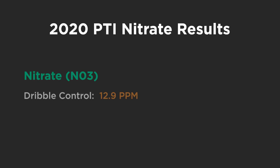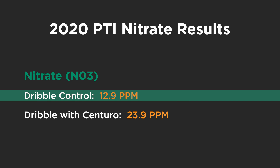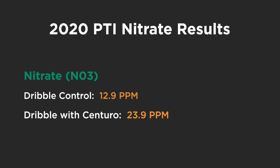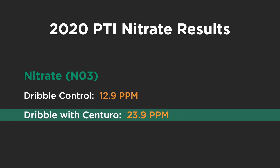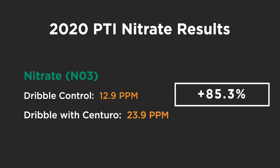We also dribbled the UAN right on top of the ground. Last week we were finding 12.9 parts per million — super low. We add Centuro in with it and we bump right back up to 23.9 ppm. That's an 85.3% improvement. So we're seeing some real differences with Centuro this year.